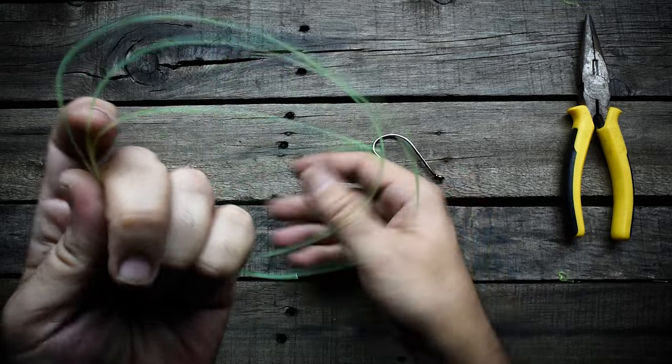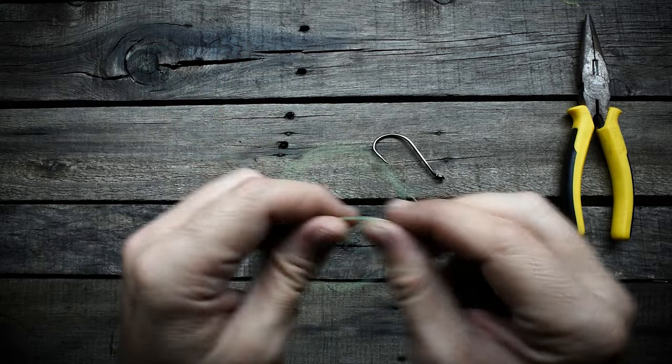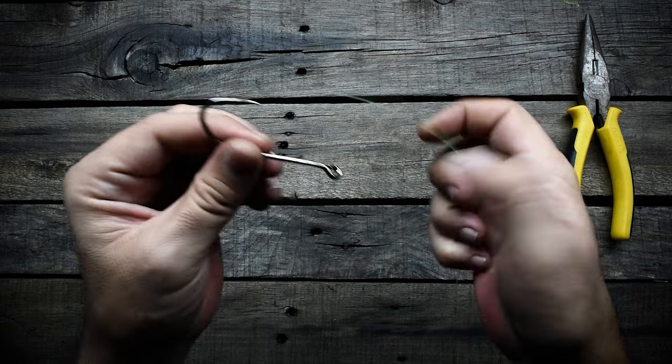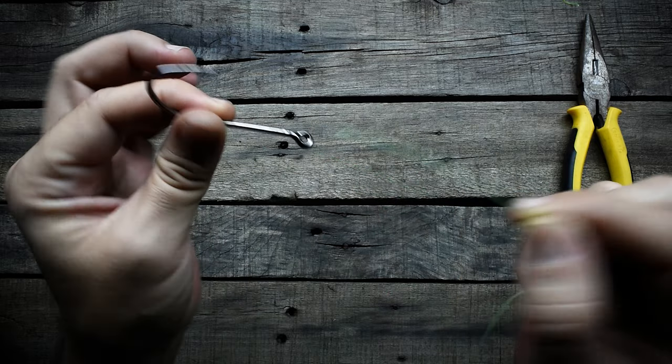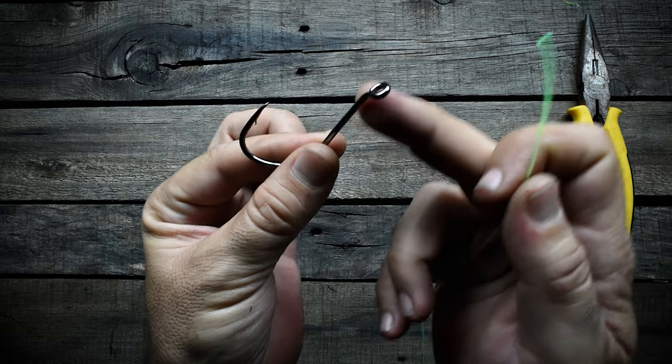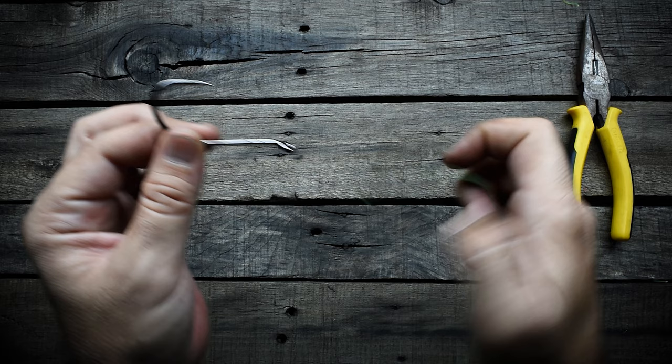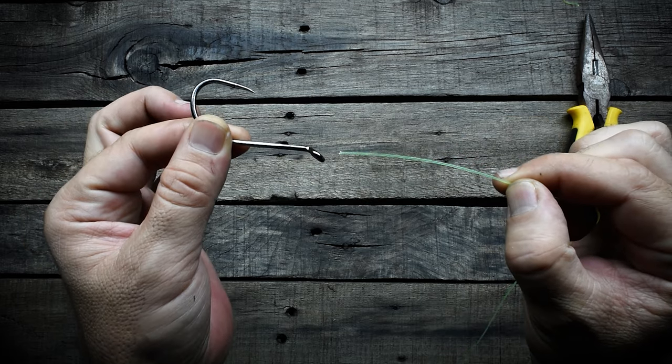So I'm going to go ahead and snell this hook. It's actually a pretty straightforward process. It's a little bit tricky to see my hands while I'm doing this, but basically notice that the eye of the hook is actually offset back a little bit. You're going to put it in through that part of the eye, through the back.